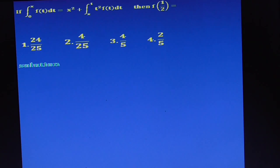Friends, this question is a JEE 2019 January memory-based question. If integral 0 to x of f(t)dt equals x squared plus integral x to 1 of t squared f(t)dt, then we have to calculate f(1/2).